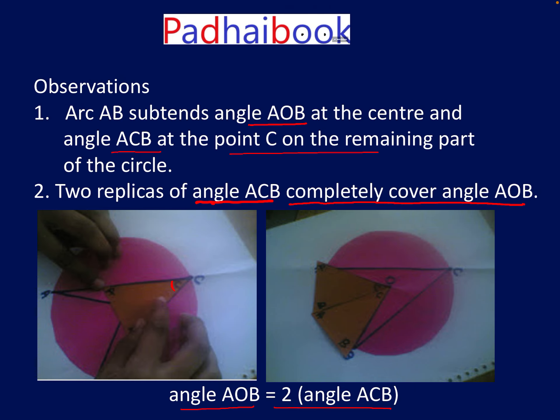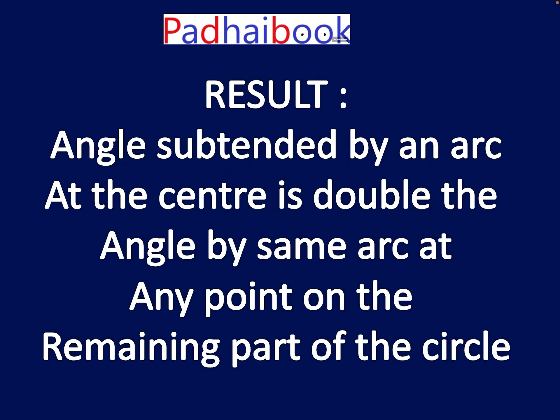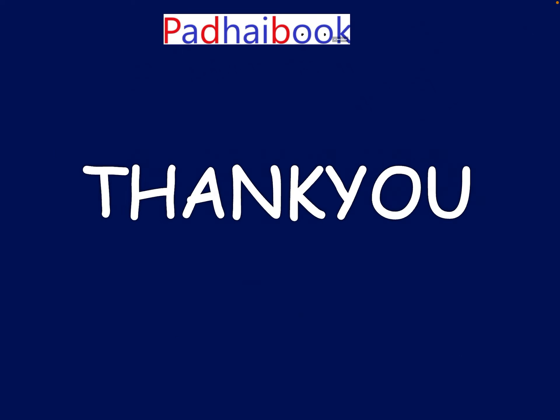Result: the angle subtended by an arc at the center is double the angle subtended by the same arc at any point on the remaining part of the circle. I hope you all are able to understand how to perform this activity. Thank you everyone.